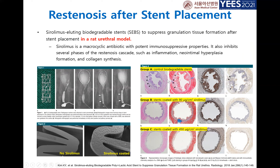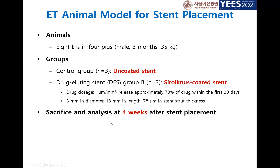We have experience with urinary stents. When using a bare stent, there is re-stenosis due to hyperplasia. When using sirolimus — which suppresses granulation tissue formation — we could achieve more successfully decreased re-stenosis. So we conducted research with an animal model for stent placement in the eustachian tube.